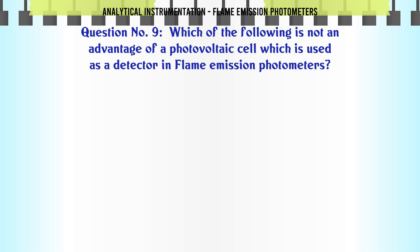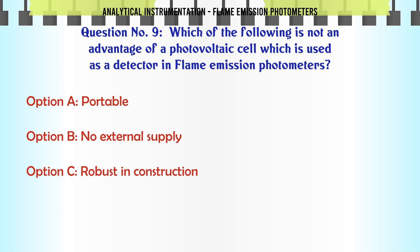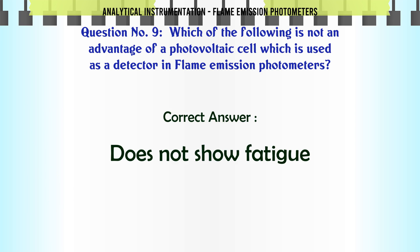Which of the following is not an advantage of a photovoltaic cell used as a detector in flame emission photometers? A. Portable. B. No external supply required. C. Robust in construction. D. Does not show fatigue. The correct answer is: Does not show fatigue.